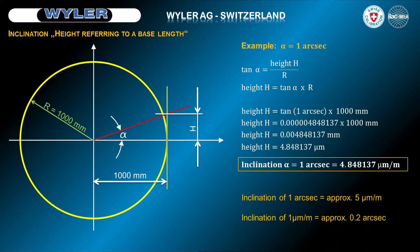In daily use, we use the rounded value of 5 µm per meter for 1 arc second. In reverse, 1 µm per meter corresponds, rounded, to 0.2 arc seconds.